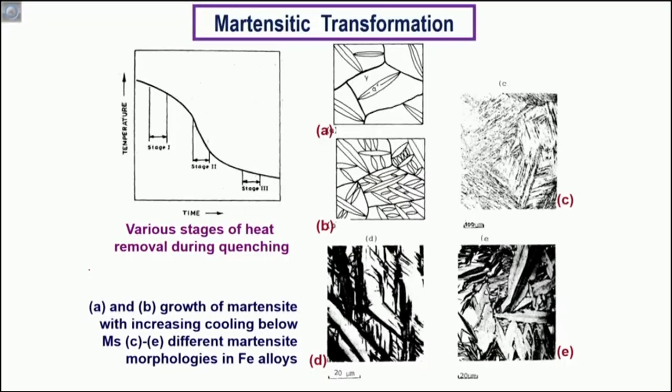Both of them arise out of eutectoid transformation; only the product aggregate is different in these two cases, and they also follow two different transformation mechanisms. Today we are going to talk about martensitic transformation, which is very different in terms of mechanism, product morphology, and the path taken. The basic difference arises from the fact that martensite is a non-diffusion controlled transformation product, a so-called shear transformation product, as against the diffusion controlled transformations of the pearlitic and bainitic varieties.